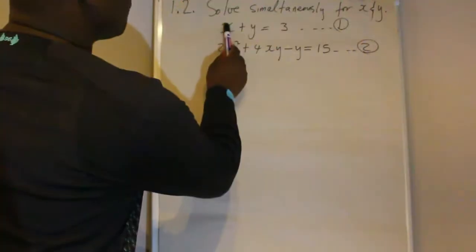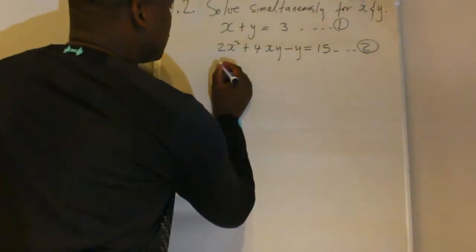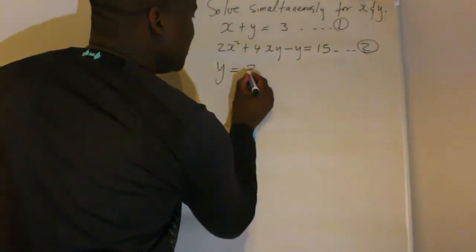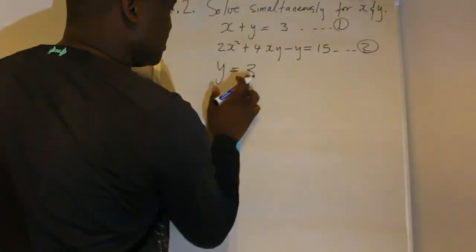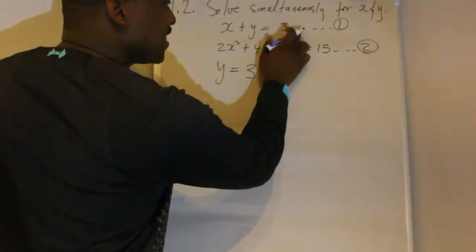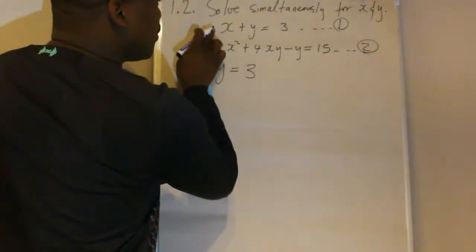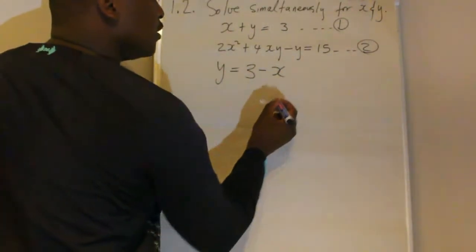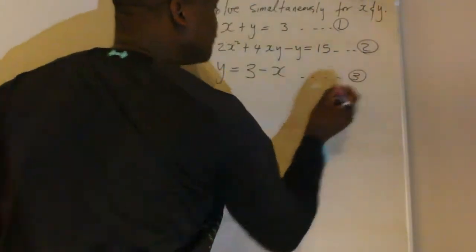So I will transform x to the other side. I will be left with y on this side, equal to 3. The x — I'm transposing it to the other side. It's positive, so it will become negative. This is how you get your third equation.